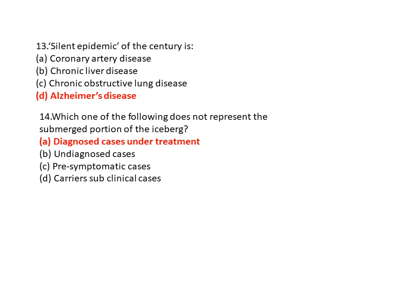Question 14: Which one of the following does not represent a submerged portion of the iceberg? Option A is diagnosed cases under treatment, option B is undiagnosed cases, option C is presymptomatic cases, and option D is carrier sub-clinical cases. So option A is the correct answer — diagnosed cases under treatment.